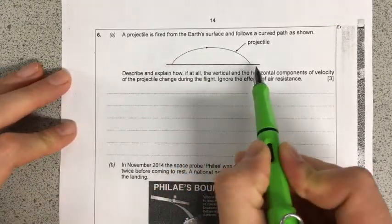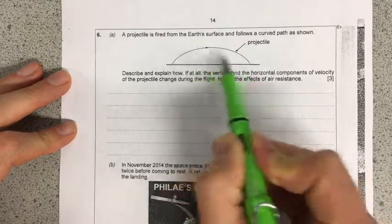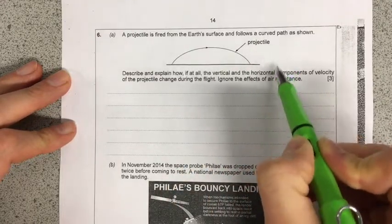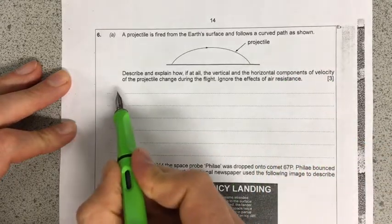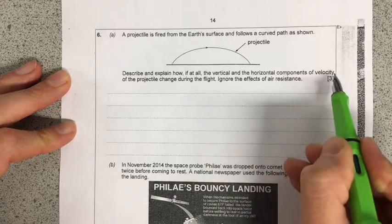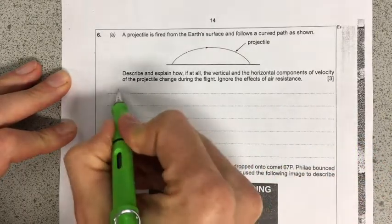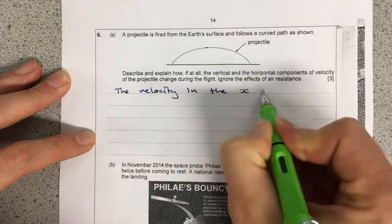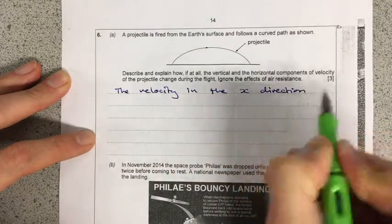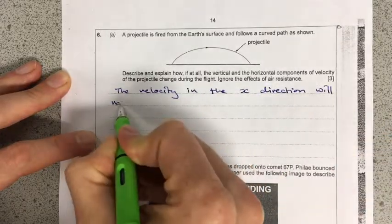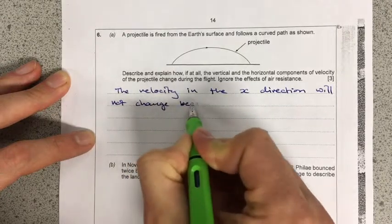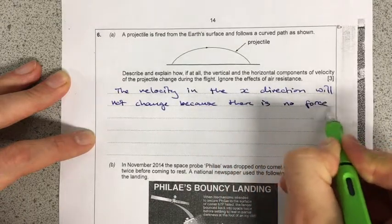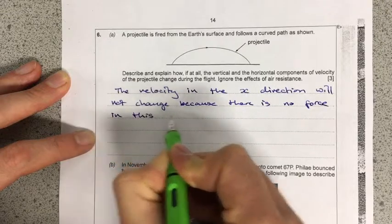This question initially is asking us to consider how projectiles behave in gravitational fields. So the gravitational field is going to give us a change in the y direction, but no change in the x direction. It wants me to explain how it will move, what the effect will be on the velocity as it goes through its flight. So I'm going to say that the velocity in the x direction, that's across the page this way, will not change because there is no force in this direction.